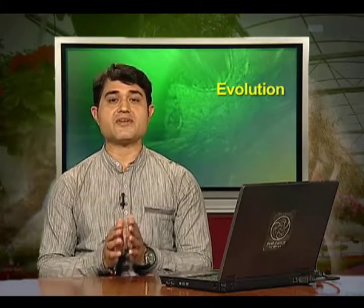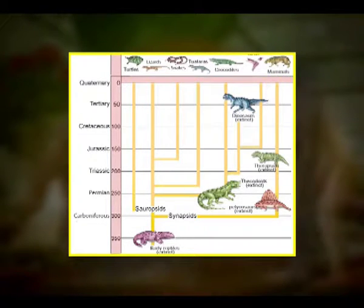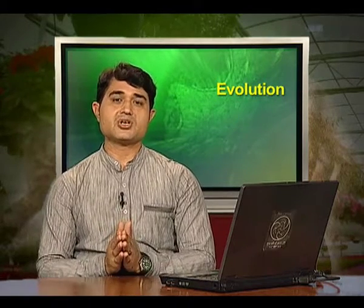The most successful story is the evolution of man, with language skills and self-consciousness. A rough sketch of the evolution of life forms and their times on geological scales are indicated here. Now we will discuss the origin and evolution of man.